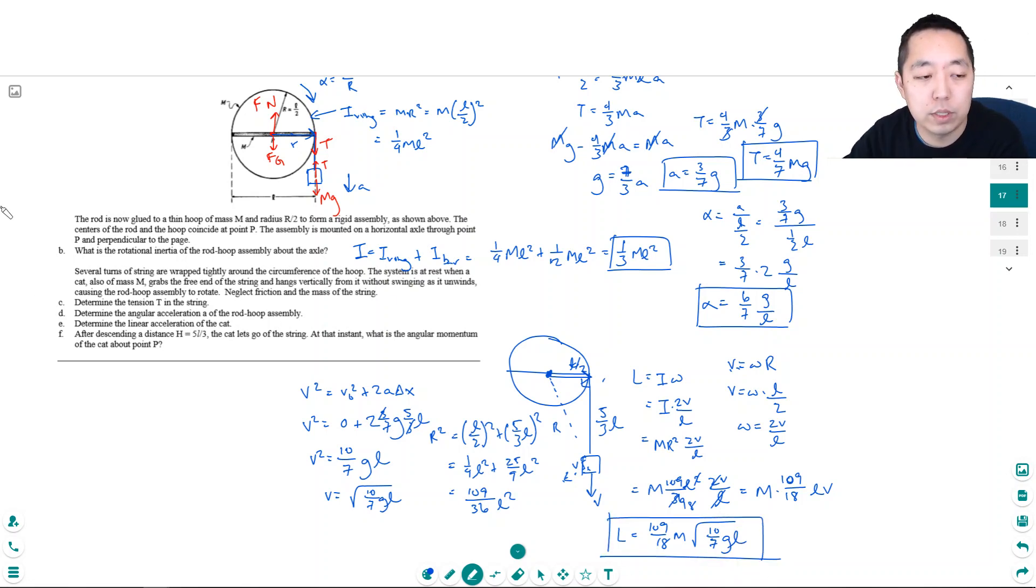That one is a pretty tricky one. That one had a lot of subtle concepts. I think I did that right. I could have an arithmetic mistake in there, but I think I did that right. Thanks for watching. I'll see you in the next video.